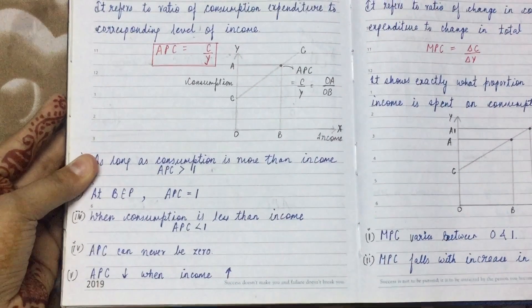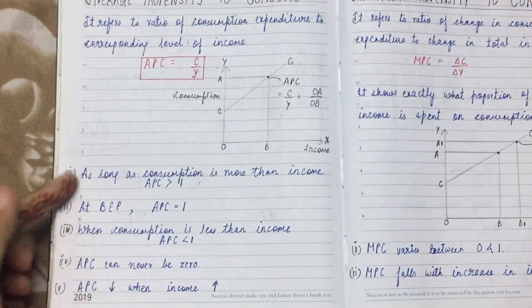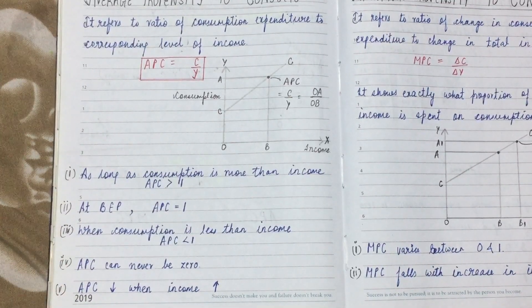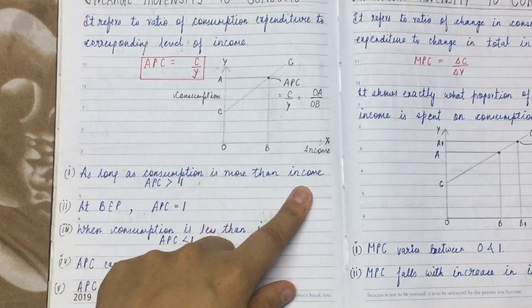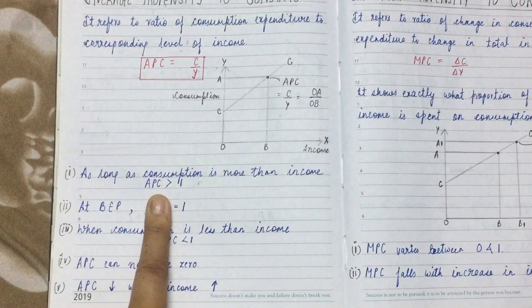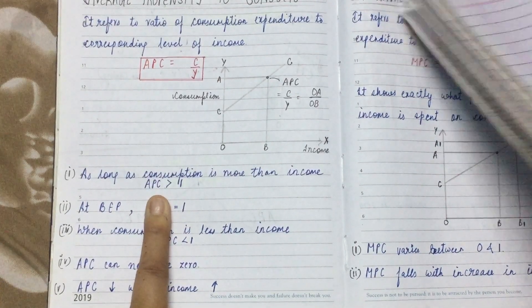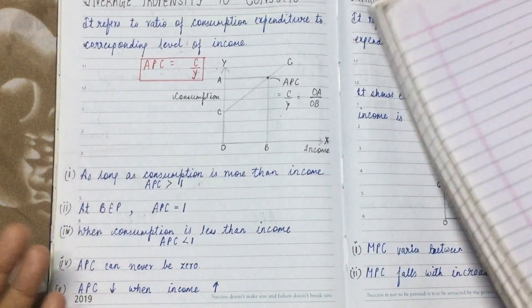Now we will learn the properties of APC. These properties are very important, especially for your exam, so pay attention. First property: as long as consumption is more than income, APC is always greater than 1. When consumption is more than income, APC is more than 1.